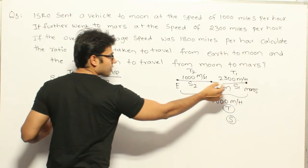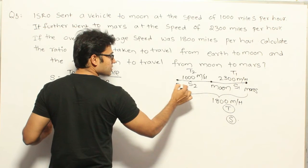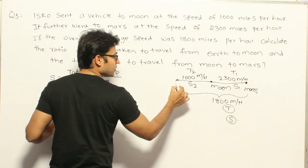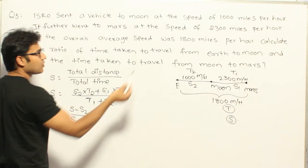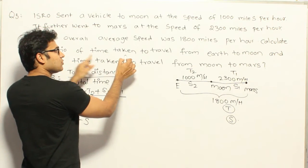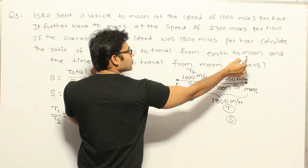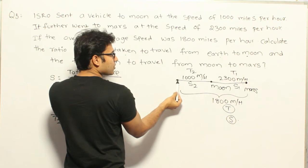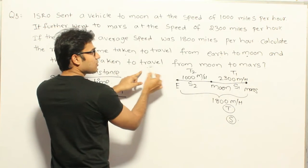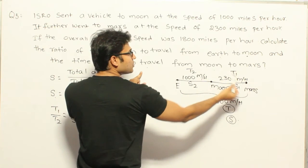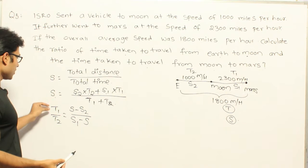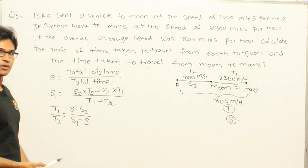T1 is the time taken from Moon to Mars and T2 is the time taken from Earth to Moon. The question asks for the ratio of time taken from Earth to Moon to time taken from Moon to Mars, which is T2 to T1. So we can find T1 to T2 and then flip it.